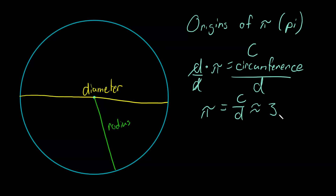Eventually they got a little bit more accurate and said it's probably closer to 3.1. That's the value they used for a while until Archimedes, a famous mathematician in 250 B.C., said this is not accurate enough — this 3.1 nonsense is not accurate enough.